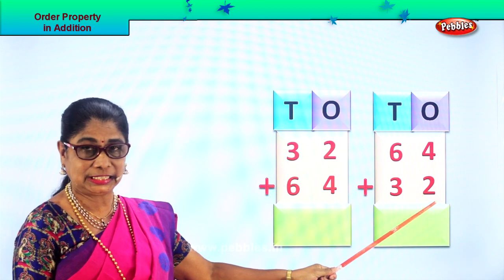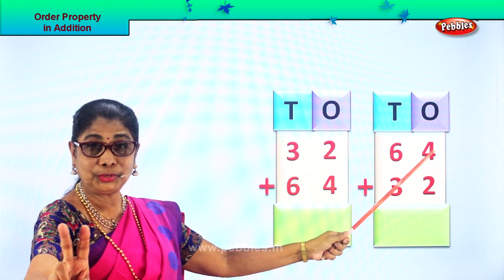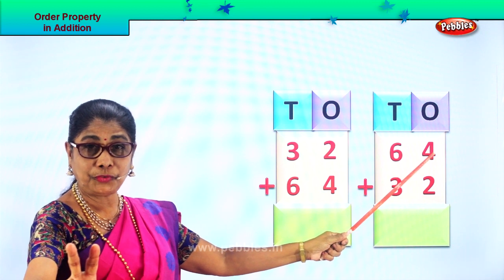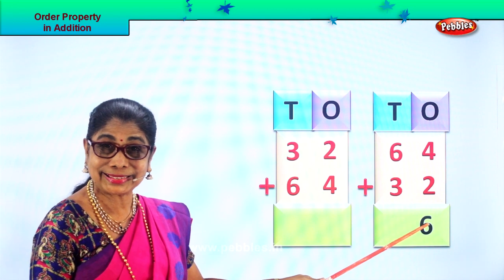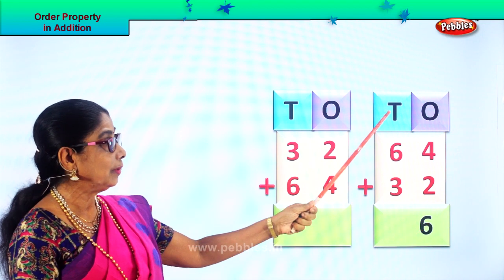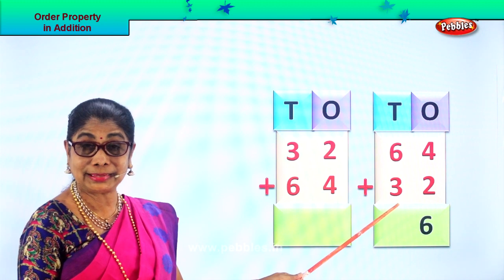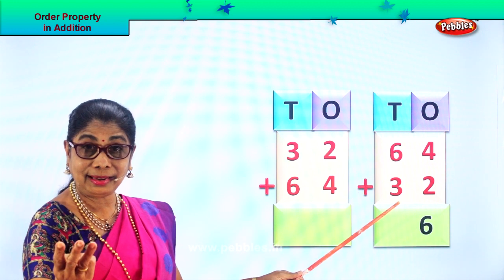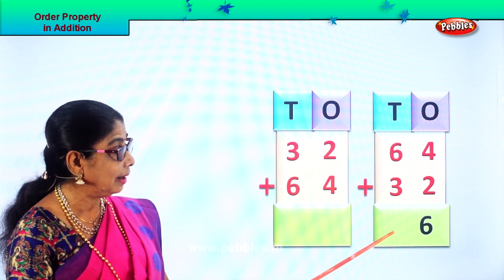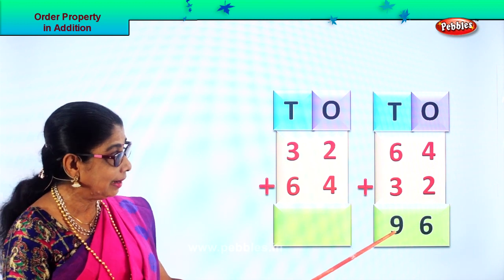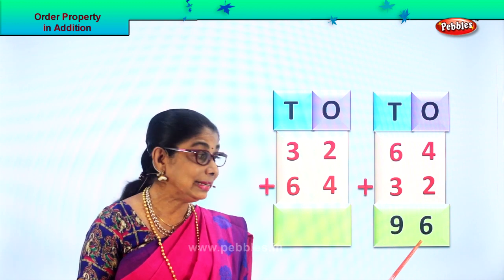Let's add the ones place first. 4 ones plus 2 ones — 4 in the mind, 2 on your fingers. After 4: 5, 6. We get 6 ones. Now take the tens: 6 tens plus 3 tens — 6 in the mind, take 3 on your fingers. After 6: 7, 8, 9, 10. So we get 96. 64 plus 32 is 96.